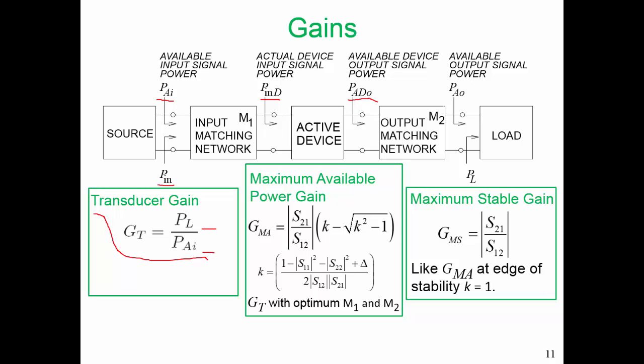At the output of our matching network is an available output power. Finally, if everything is designed optimally, we will have a load power delivered to our load, which would be the maximum load power that we could have. So transducer gain is the gain that we want in the end. When we're given a design specification of 14 dB, it is the transducer gain that we want at 14 dB.